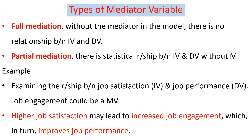There are two types of mediator variables: full mediation and partial mediation. In full mediation, without the mediator in the model there is no significant relationship between the independent and dependent variable — the mediator is the required link. In partial mediation, there is still a statistically significant relationship between the independent and dependent variable even without the mediator. Both the direct and indirect relationships are significant, but when the mediator is incorporated, the direct effect reduces because some of the effect of the independent variable is taken by the mediator.